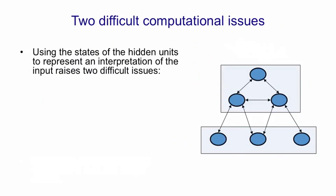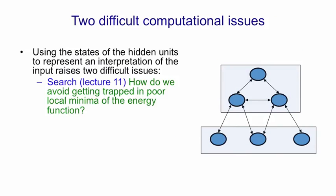So if we decide we're going to use low energy states to represent good perceptual interpretations, then we have two issues. The first is to do with search and I'm going to deal with that in the next video. The search question is how do we avoid the hidden units getting trapped in poor local minima of the energy function. The poor minima represent interpretations that are sub-optimal given our current model in the weights of the network. Can we do anything better than simply going downhill in energy from some random starting state?